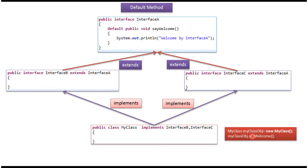Here I am creating a my class object and calling the say welcome method. This will call the say welcome method which is in interface A, and this say welcome method is a default method.